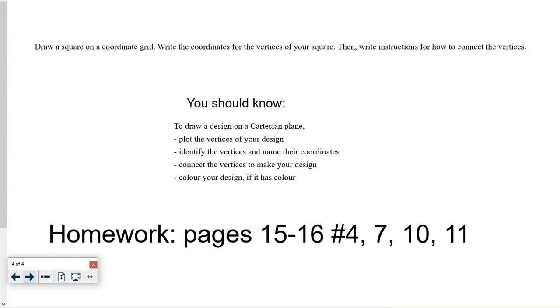So to show you know what you're doing, please draw a square on a coordinate grid, write the coordinates for the vertices of your square, then write instructions for how to connect the vertices. You should now know how to draw a design on a Cartesian plane, how to plot the vertices of your design, identify the vertices and name their coordinates, connect the vertices to make your design, and color your design if it has color.